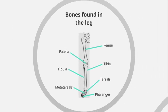Moving on to the final section — the bones found in the leg. At the top of the leg we have the femur, which is the biggest bone in the body. We then move down to the patella, which you might refer to as your kneecap. Similar to the radius and ulna, there are two bones in the lower part of the leg: the tibia and the fibula. The tibia is the bigger of the two. Moving further down, we have the tarsals — small strong bones that form the ankle joint. These lead onto the metatarsals, a common injury in footballers, and then the phalanges, similar in structure to the fingers.